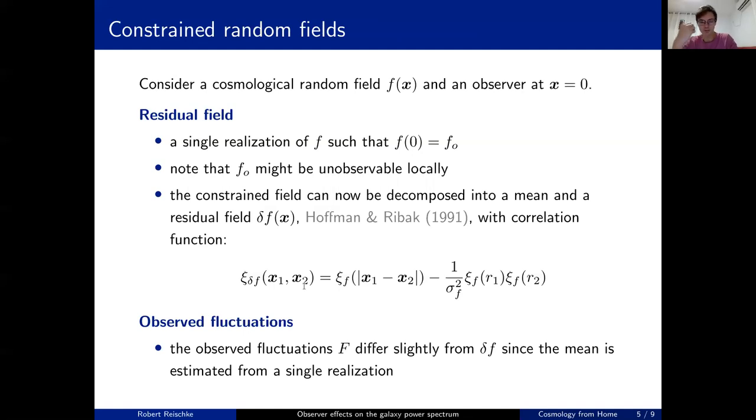As I mentioned before, there's a slight difference. The observed fluctuations are a bit different from delta f since you estimate the mean from a single realization, which is basically from the data. If you have a patch in the sky, you average over everything. If this is your field of view or your survey, you average over everything. This would define your mean, which might already differ from the global mean, which you can't tell in the first place.